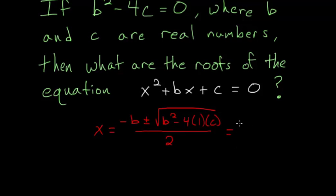And if we simplify, we have minus b plus or minus the square root of b squared minus 4c over 2.